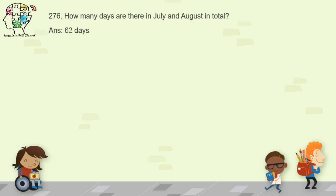Question 277: one month is equal to how many hours? One day equals 24 hours, so multiply 24 by 30. The answer is 720 hours.